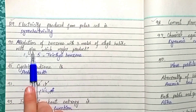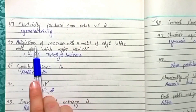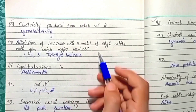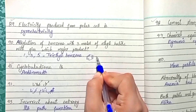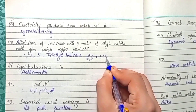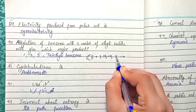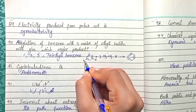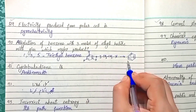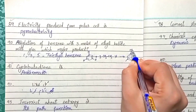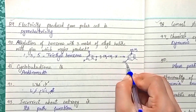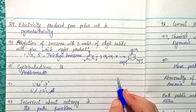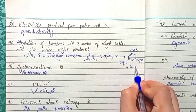Question 90: Alkylation of benzene with 3 moles of ethyl halide gives triethylbenzene as the major product. Three ethyl groups are substituted onto benzene, and 3 moles of hydrogen halide are also produced.